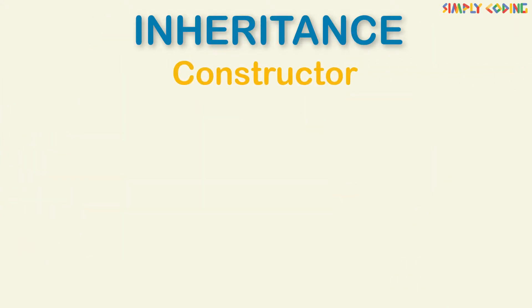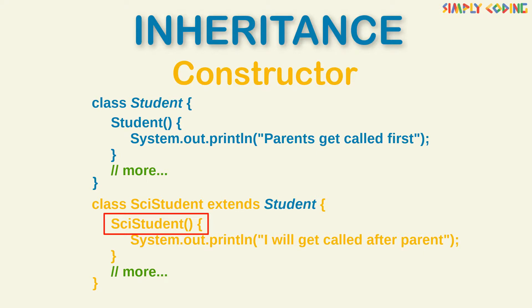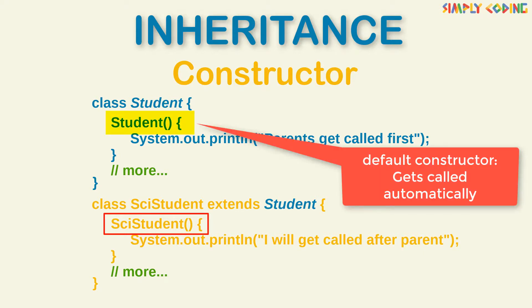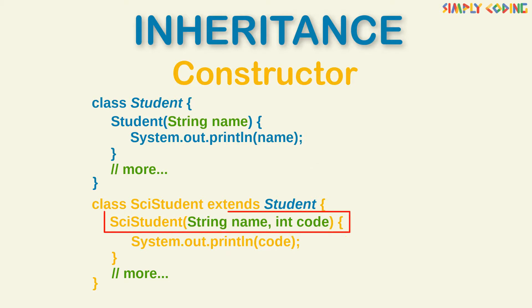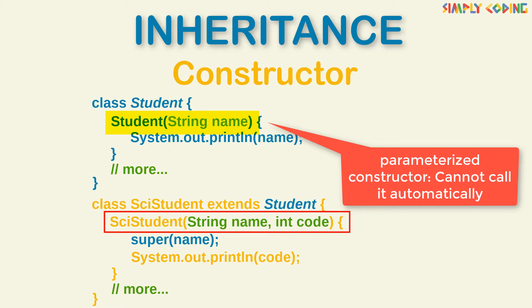Some key points about constructors: a constructor is never inherited. When a subclass constructor is called, it will automatically call the default constructor of the superclass first. But if you have a parameterized constructor, it cannot be called automatically — you must call it explicitly as the first statement in the derived class constructor using the super keyword. In our next video, we will solve some programming questions on inheritance. Thank you and all the best.